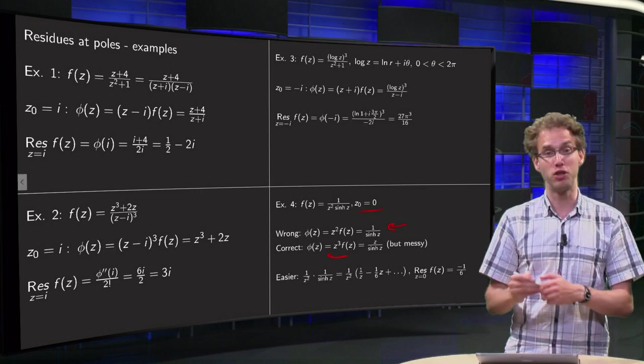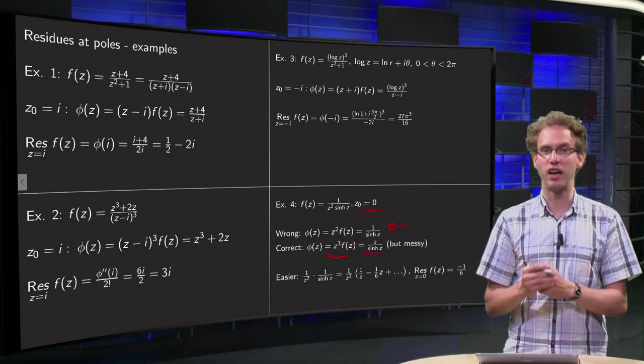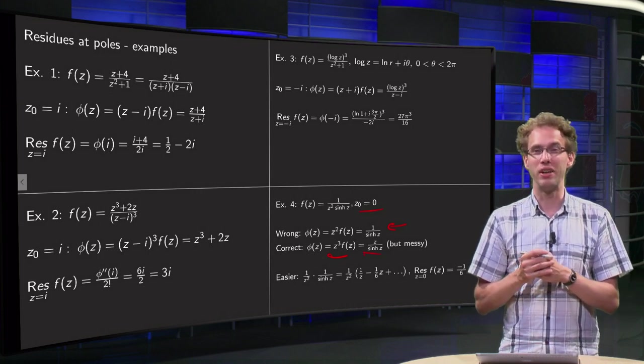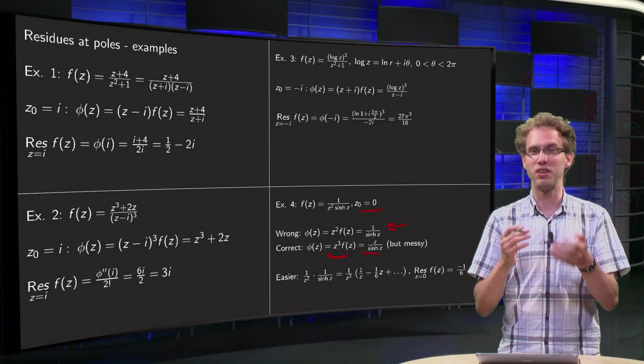Your phi becomes z cubed times f of z equals z over sine hyperbolic of z. Well, then you have a third order pole, so differentiate twice.